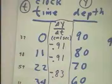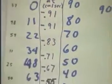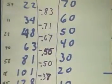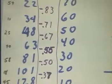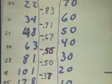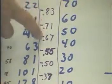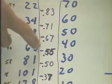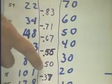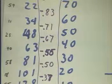And we can look at the remaining time intervals. We see that the rate of depth change keeps decreasing from negative 0.71 centimeters per second to negative 0.67, negative 0.55, negative 0.50, and negative 0.38.